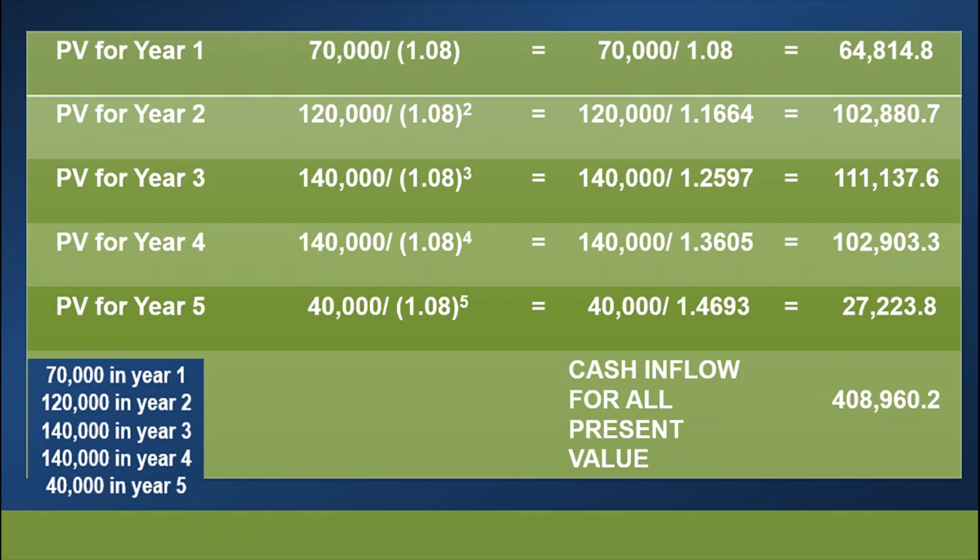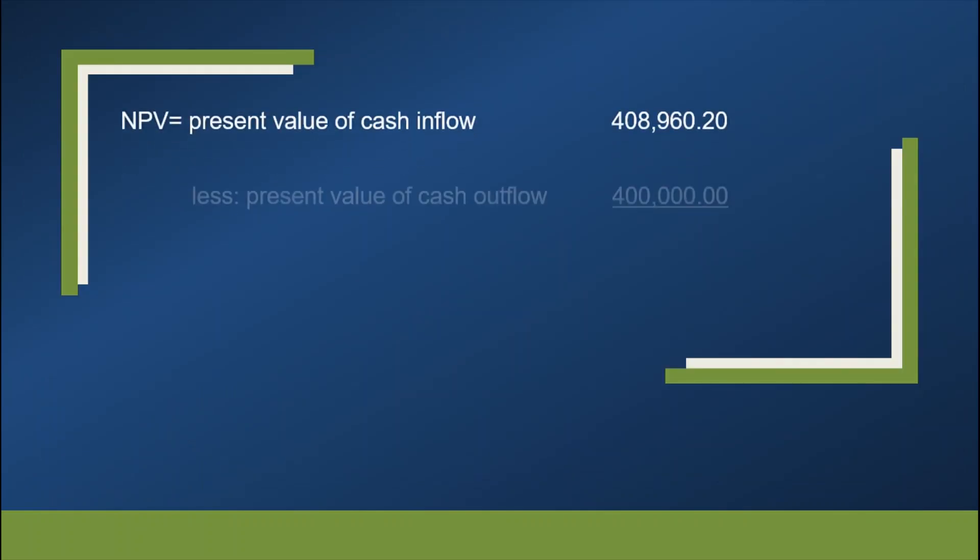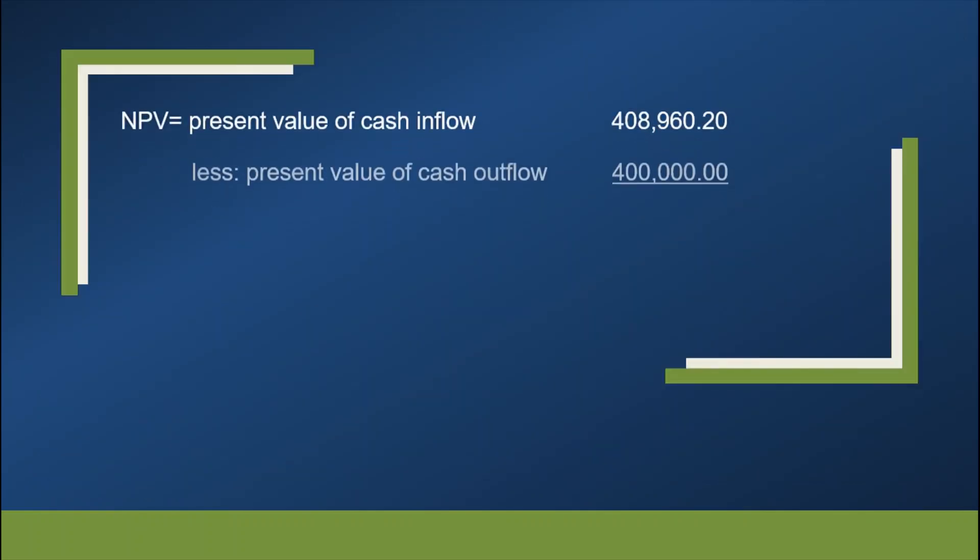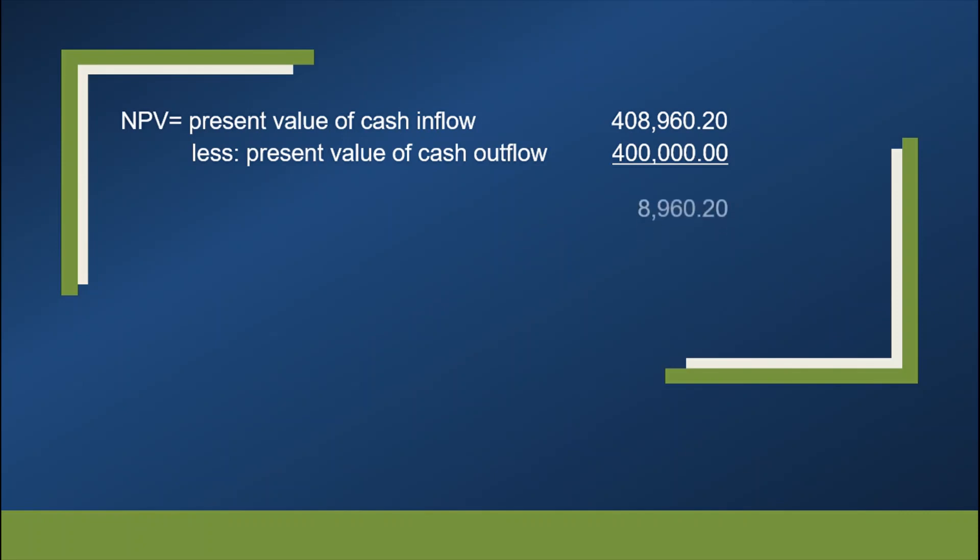I hope that my explanation on this table is clear enough. Let's move on. After that, step 3 would be, we are going to find the difference between the PV of all cash inflows and the PV of all cash outflows. Our present value of all cash inflows is 408,960. And we are going to deduct that with the PV of cash outflow. As the problem says, a sum of 400,000 pesos. So that is our outflow.